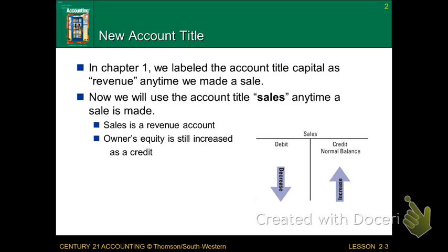Now we're going to be a little bit more specific. We're going to use the account title Sales any time that we make a sale — that way it's a little bit easier to remember. Sales is a Revenue account, and it's ultimately affecting owners' equity. So any time we have a sale, it's an increase to owners' equity, and that is listed as a credit. Sales will only increase as a credit.